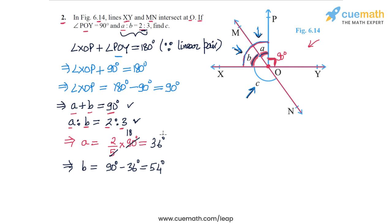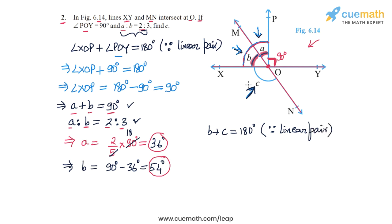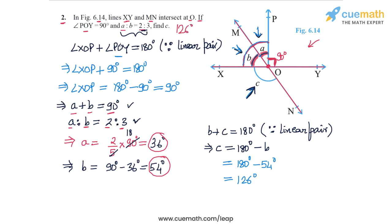So we have obtained the values of A and B separately: A is 36 degrees and B is 54 degrees. Now, finally, we can find the measure of angle C because B plus C must equal 180 degrees — these two angles are a linear pair, as both of them are on the line MN. So B plus C is 180 degrees, which means C is 180 minus B. Since B is 54 degrees, C is 180 minus 54, or 126 degrees. So the measure of angle C is 126 degrees, and that completes question 2.